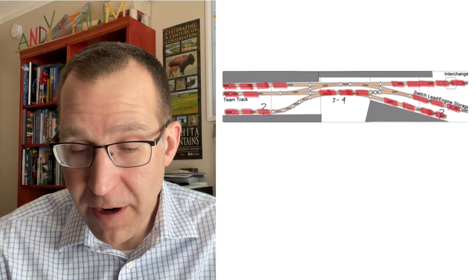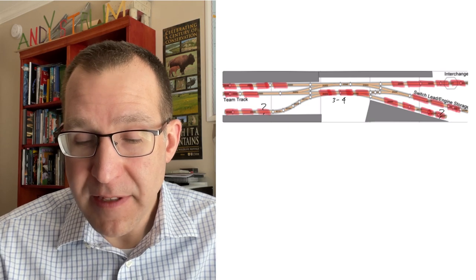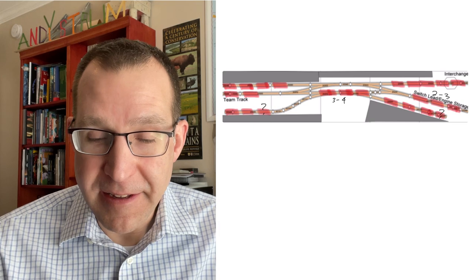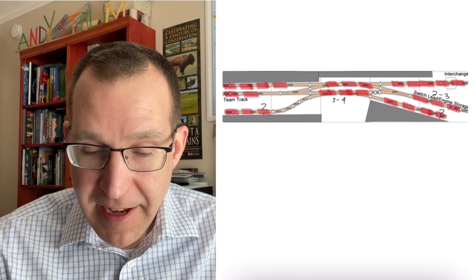And then the runaround track should be able to hold three cars on either side, maybe four on the bottom side. And so that should give me enough operating ability to move everything around without it being too much of a challenge, unless I want to add a few more cars and make it more of a challenge to do that.